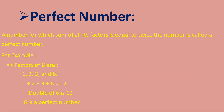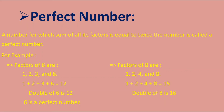Let's take one more example. Factors of 8 are 1, 2, 4, and 8. Adding them: 1 + 2 + 4 + 8 = 15. But double of 8 is 16. Therefore 8 is not a perfect number. I think you might have understood what a perfect number is, what factors are, and what multiples are.